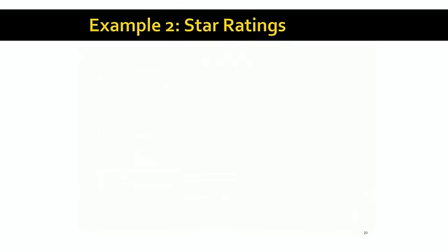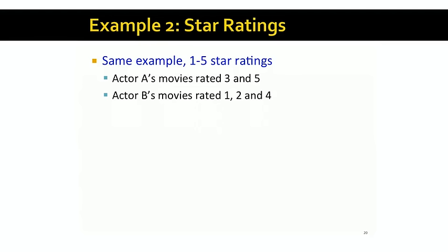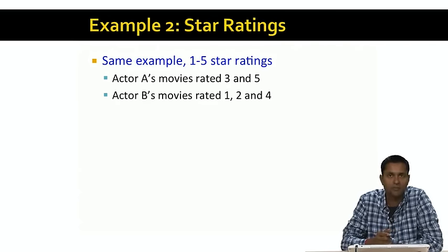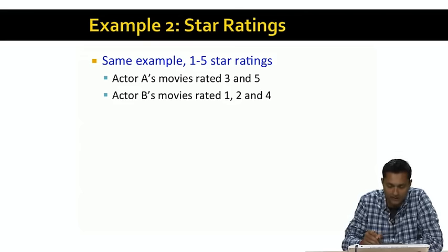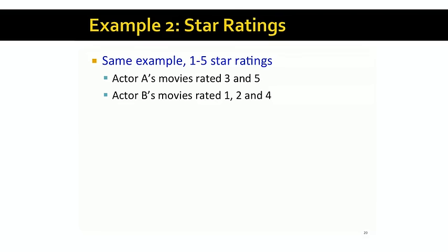Let's look at a more complex example with star ratings in the range 1 to 5. The user has watched 5 movies: 2 starring actor A and 3 starring actor B. The movies actor A starred in were rated 3 and 5, whereas the movies actor B acted in were rated 1, 2, and 4. It's somewhat apparent that the user liked at least one movie from actor A and one from actor B, but they really didn't like two of actor B's movies — the ones rated 1 and 2, which are in fact negative ratings.